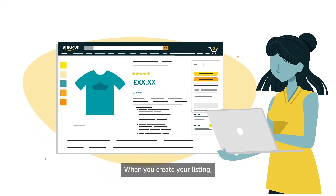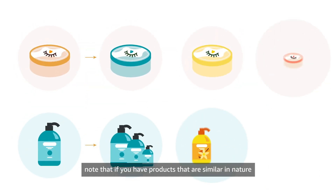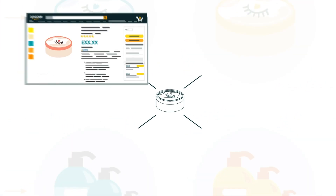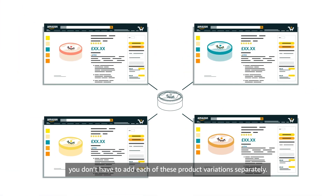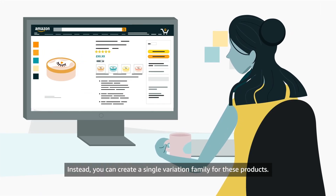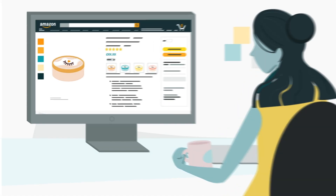When you create your listing, note that if you have products that are similar in nature but differ from each other by a single factor, like colour, you don't have to add each of these product variations separately. Instead, you can create a single variation family for these products.